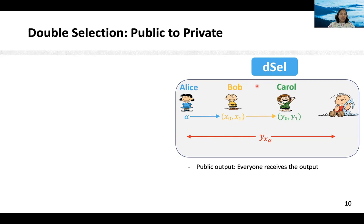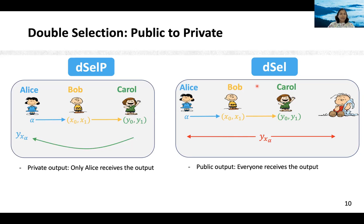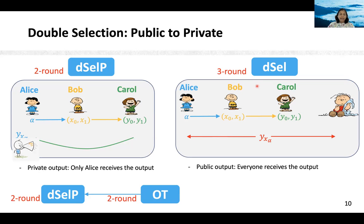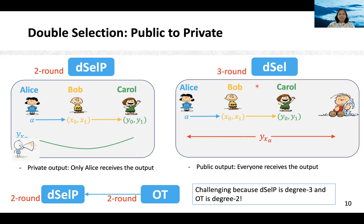Before designing a protocol for double selection functionality, let us first simplify this function further. In particular, we will move to a private output version of this functionality which we call private double selection, or DCLP. Here we have three parties, all of them provide inputs, and the output is reconstructed only towards Alice. It is easy to note that a two-round protocol for private double selection can be turned into a three-round protocol for double selection by making Alice broadcast the output in the third round. Therefore our refined goal is to construct a two-round private double selection protocol from two-round oblivious transfer. This task is still challenging because double selection private is a degree-3 function whereas oblivious transfer is a degree-2 function.